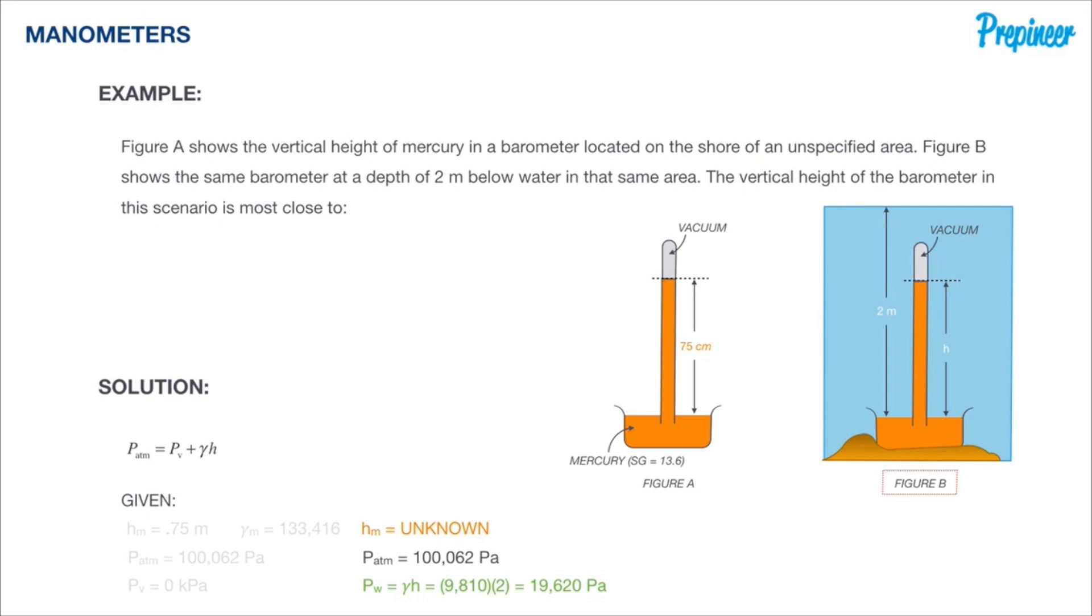So we get a pressure at the top of the mercury in the basin, or the larger limb, whatever you would like to refer to it as, at 19,620 Pa.